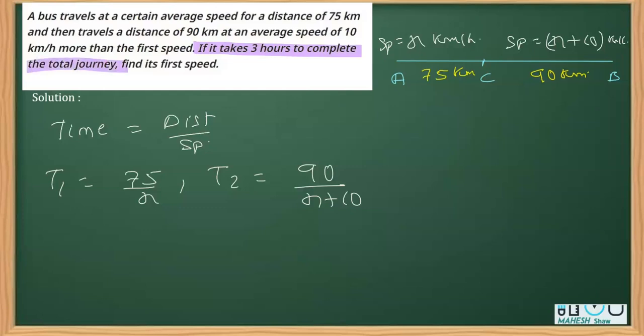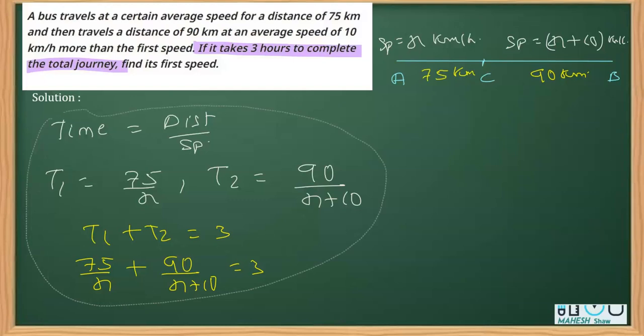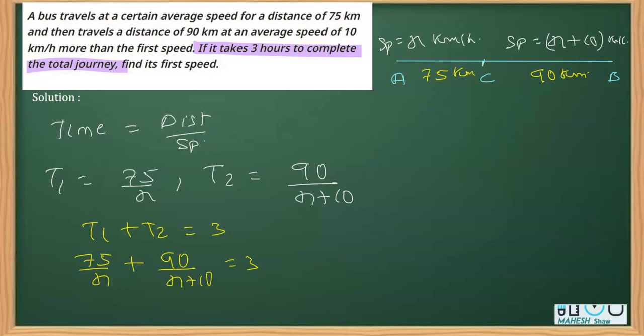Further, as you read the question, it says that it takes 3 hours to complete the whole journey. That clearly says that the sum of these two times - time in the first case plus time in the second case - should give you 3. Now simply replacing T1 with 75 over x and T2 with 90 over x plus 10 equals 3. This is what we obtained as a relation.